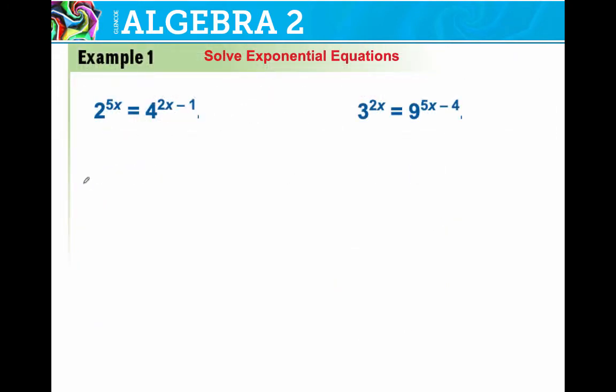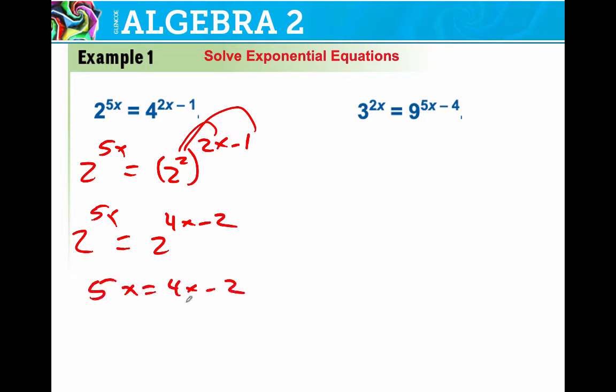Take it up a notch. Now I've got 2 to the 5x. And I'm going to change 2 to 2 squared, 2x minus 1. Very important that you understand that you need to multiply those. Multiply those. 2 to the 5x equals 2 to the 4x minus 2. 5x equals 4x minus 2 minus 4x minus 4x. x is negative 2.